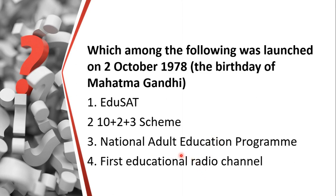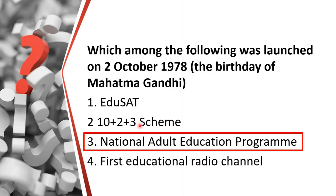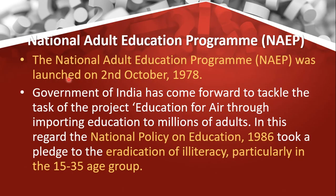The answer is: on 2nd October 1978, the National Adult Education Program was launched. The full form — NAEP — is also important to remember. You will see from National Policy on Education 1986 a focus on eradication of illiteracy, particularly in the age group of 15 to 35.